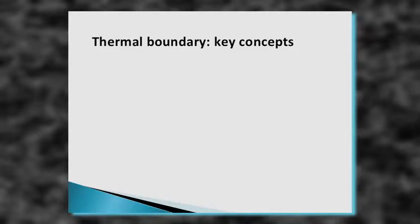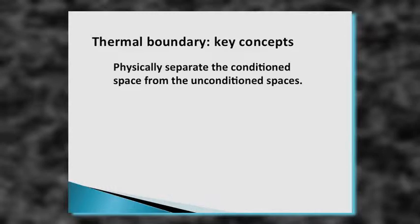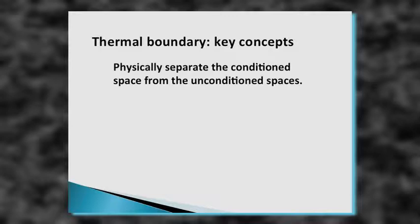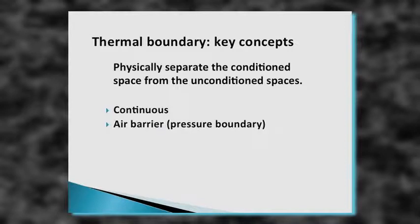Here are some key concepts about the thermal barrier. The thermal envelope is made up of the thermal barrier and the air barrier. What do they need to be? They have to be aligned with each other and they have to be continuous — continuous and aligned. For the thermal barrier to be effective, it has to be continuous, have an air barrier right next to it, and have a vapor barrier, because we can't allow our thermal barrier to get wet.